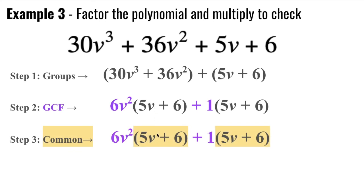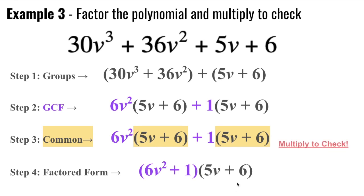As you notice, that does allow me to have this common binomial factor, which means I can step into step 4, and I can take my GCFs and put them as one binomial and multiply it by the second binomial.